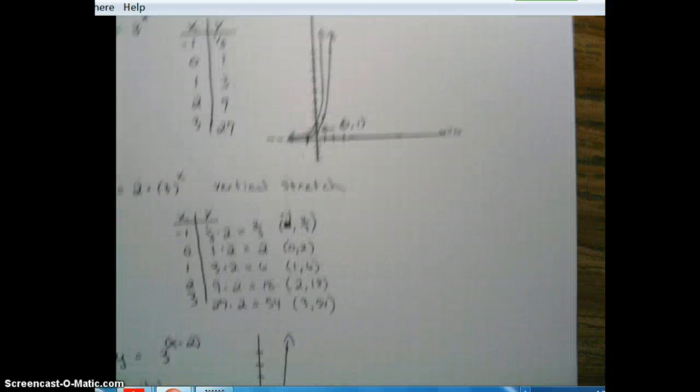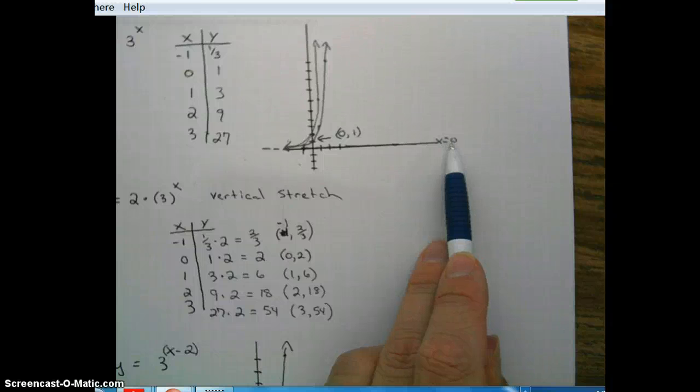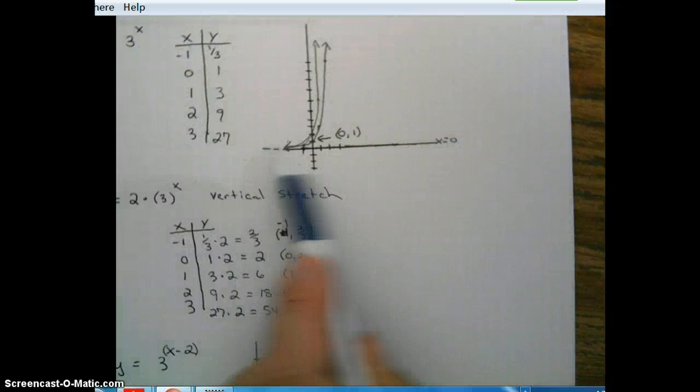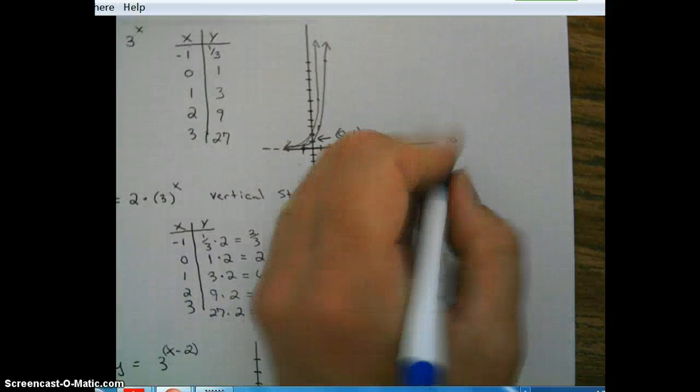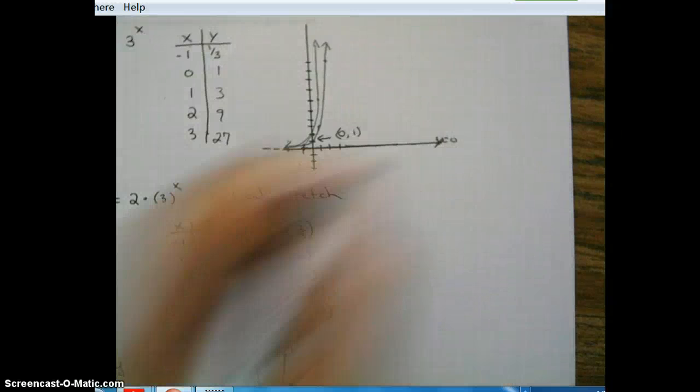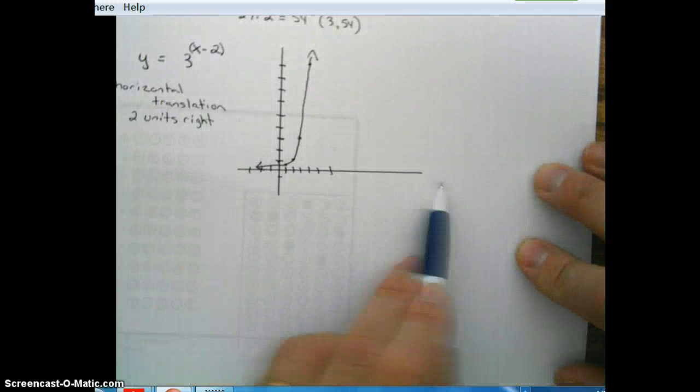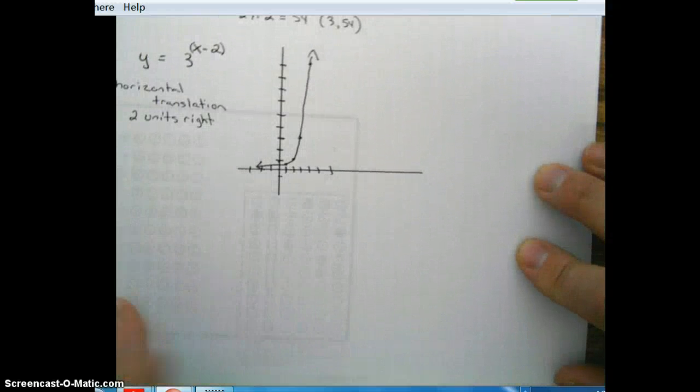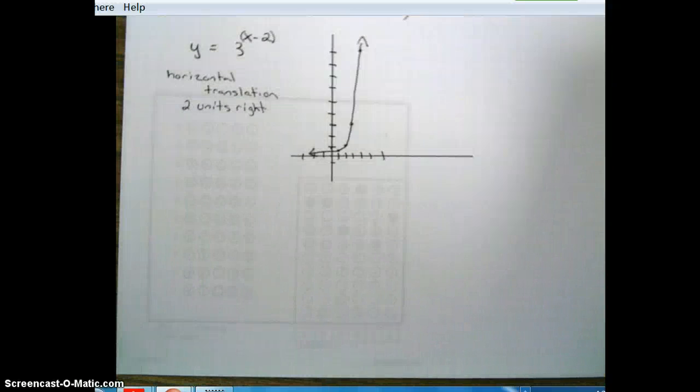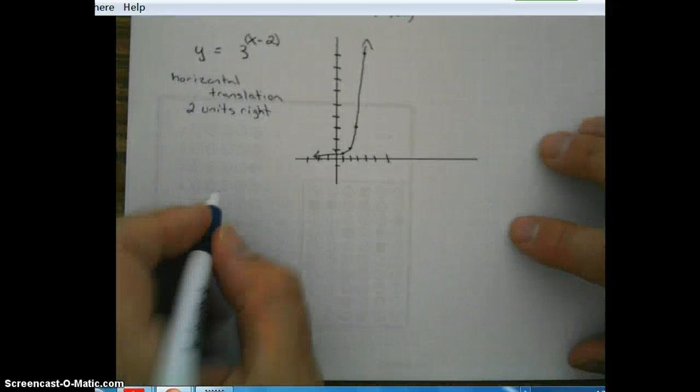So far, vertical asymptote, I'm sorry, horizontal asymptote, x equals, uh, y equals 0. Same thing with this one. It was still y equals 0. And this one, y equals 0. Okay, let's take a look at one more translation here.